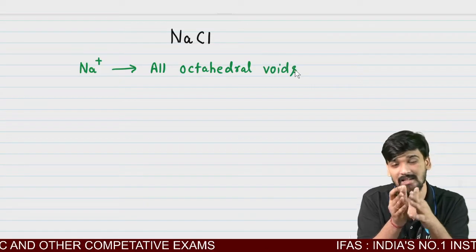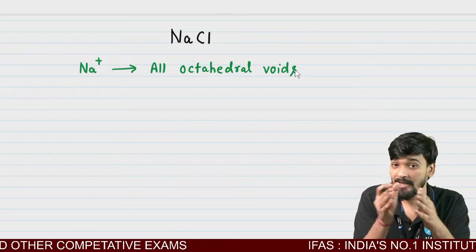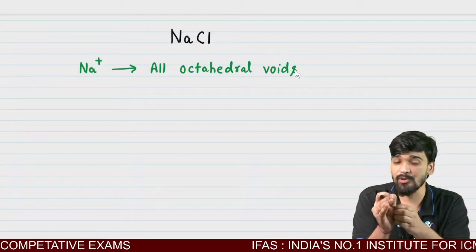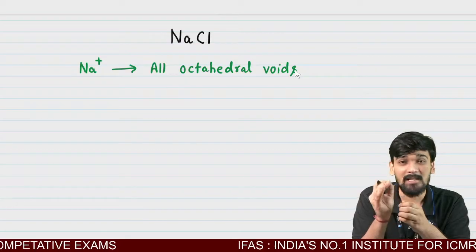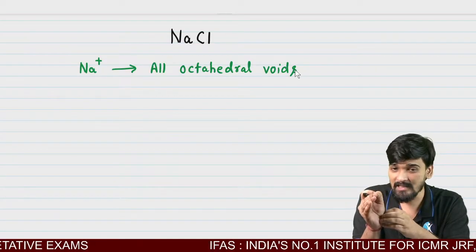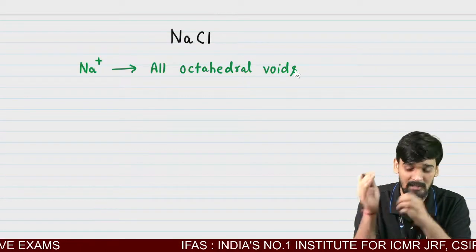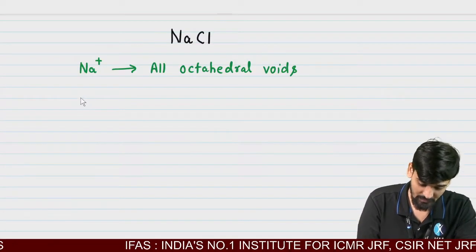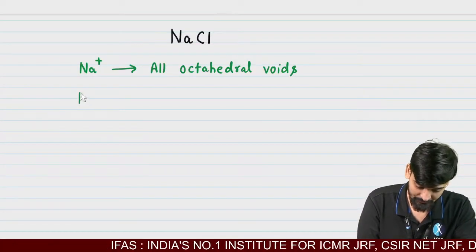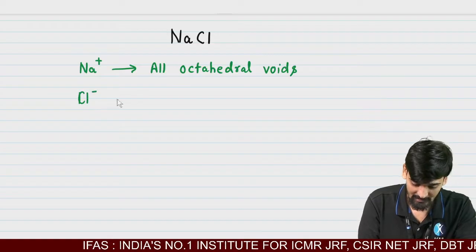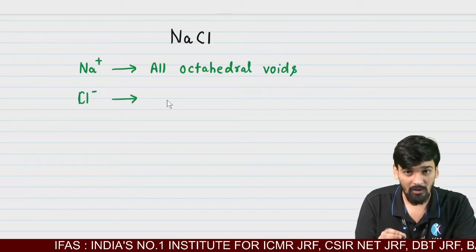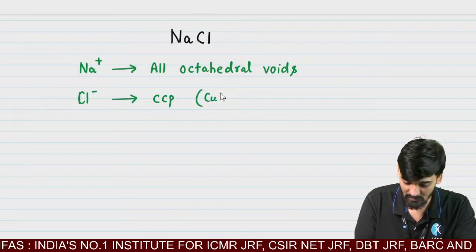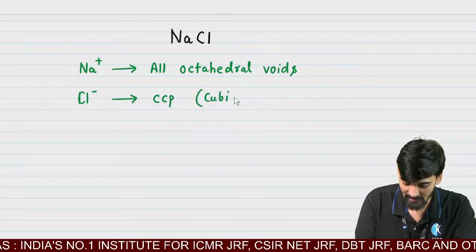Chlorine negative, which is an anion, is large in size compared to Na+. Cl- goes into the CCP arrangement. What do you mean by CCP? CCP is the cubic close-packed structure, which is just like an FCC type. Cl- undergoes or goes into the CCP, which is known as cubic close-packed structure.